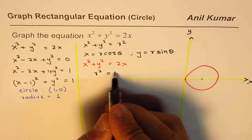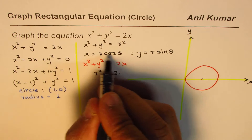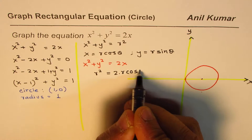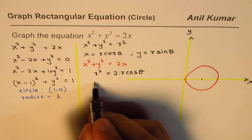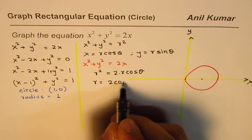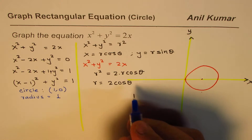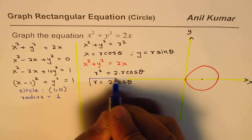Since x equals r cosθ, it becomes r squared equals 2r cosθ. Now r and r cancel, so we have r equals 2cosθ. That is the equation in polar form.